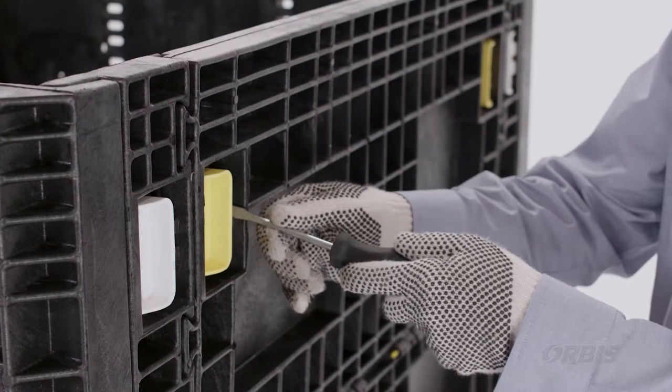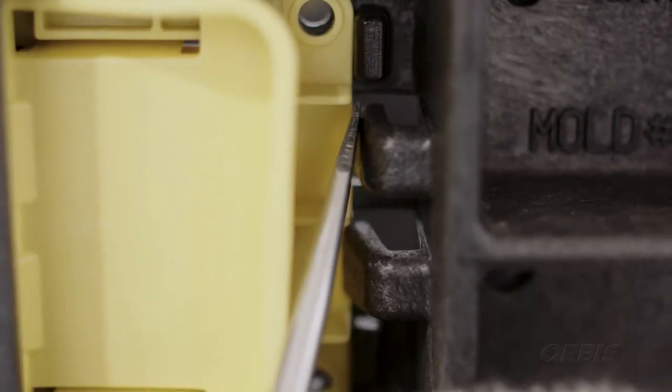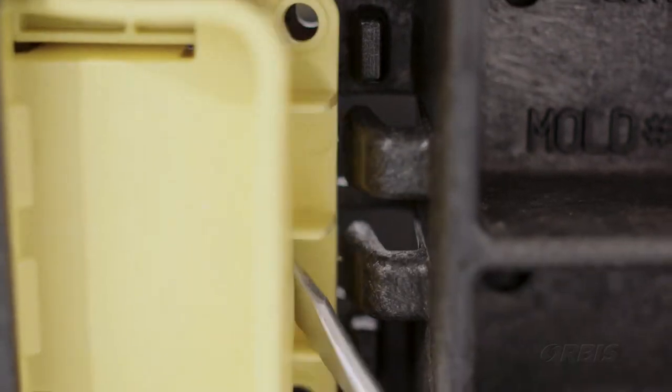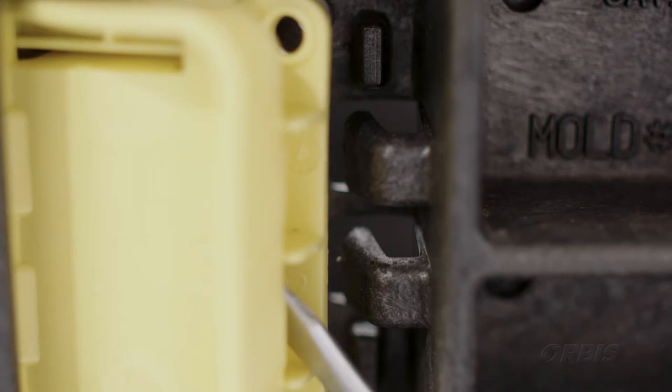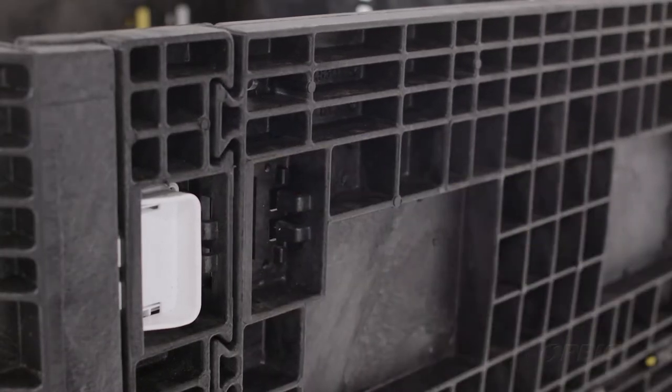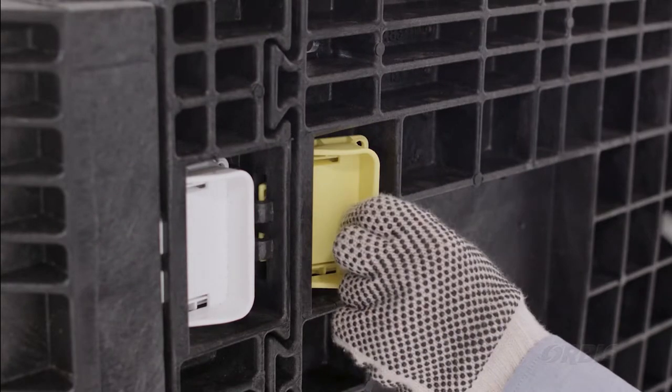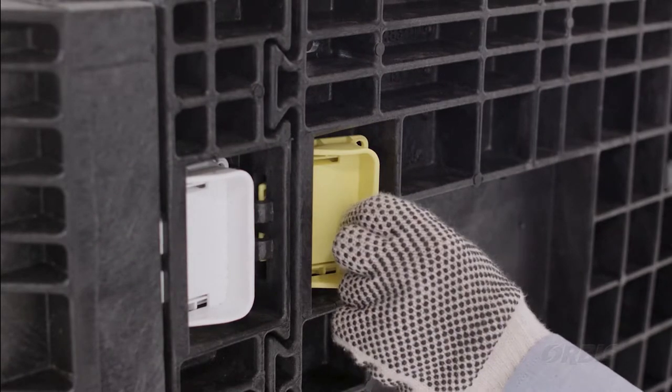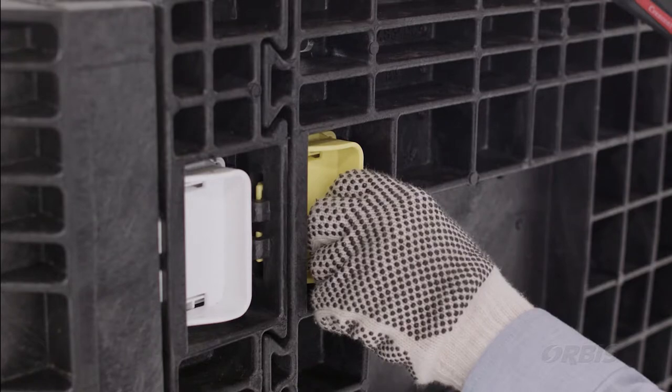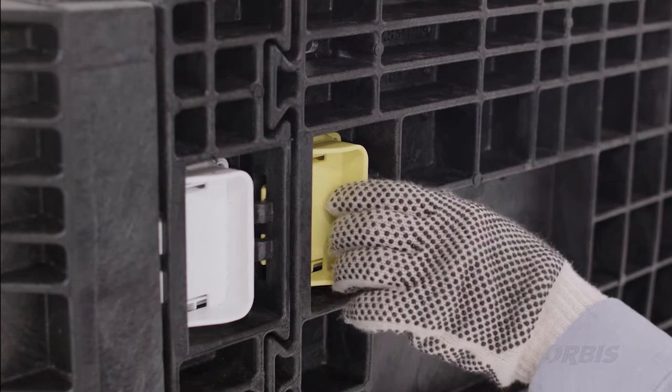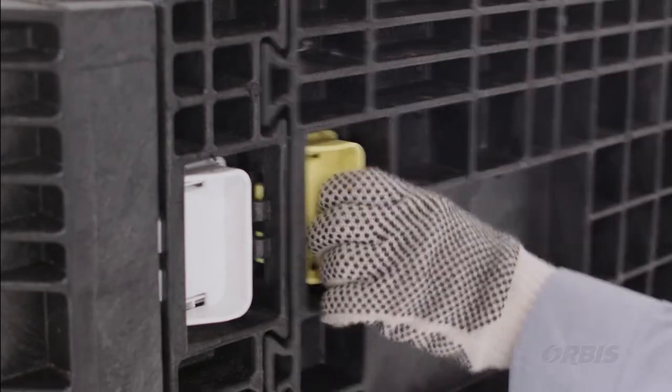Insert the flathead screwdriver in between the latch and the tab that is holding the latch in place. Push the latch over so it disengages from the tab and the latch will be able to be removed. Remove latch and push new latch in place. Take the new latch and place it in the latch location. Push down on the latch and it will snap into place. Latch replacement is the same for the sidewall and the access door.